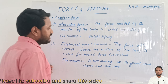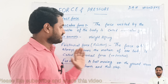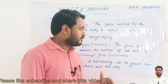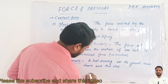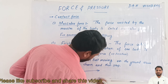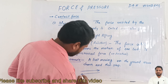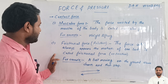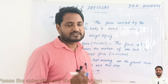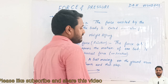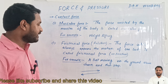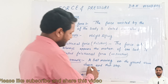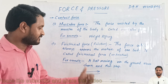Next is frictional force, also known as friction. Friction is the force which always opposes the motion of one body. For example, if motion is in the forward direction, friction acts in the backward direction, opposing it. When a ball moves on the ground, it slows down and eventually stops due to frictional force.